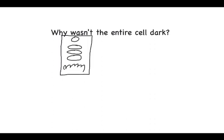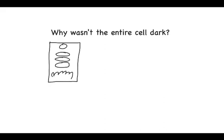In the cytoplasm, right? I mean it happens on the ER too, because that's why we have a rough ER. But it's not just only on the ER. So the question is, why wasn't the entire cell dark?